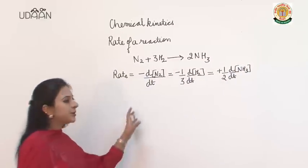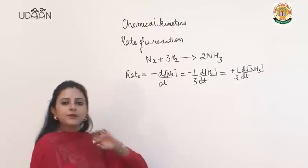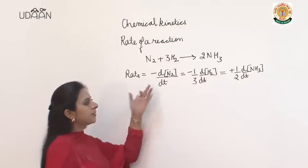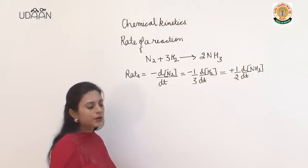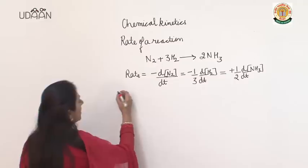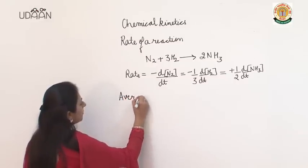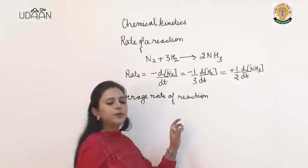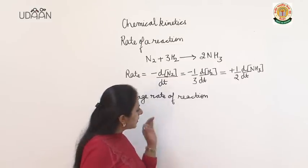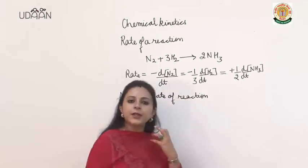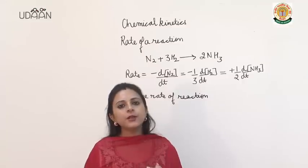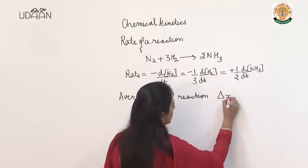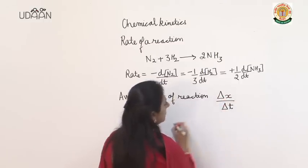So this is the rate of reaction and we can write it for any reaction depending upon the stoichiometric coefficient and what are the reactants and products given. Now let us understand what we mean by average rate of reaction. Average rate of reaction gives us the rate of reaction over an interval of time. The formula is delta x by delta t.